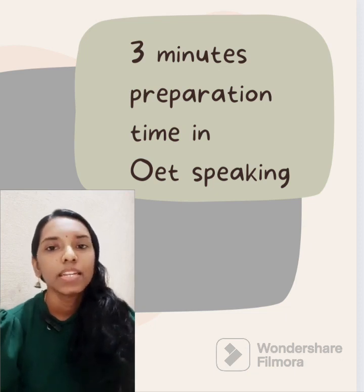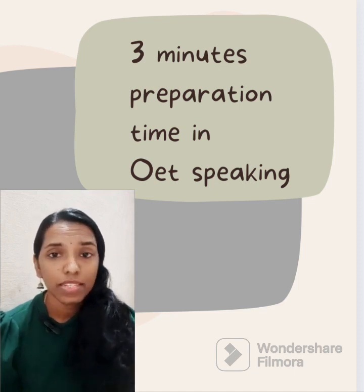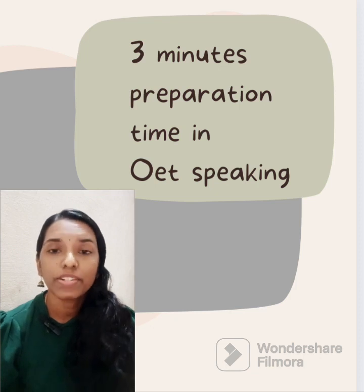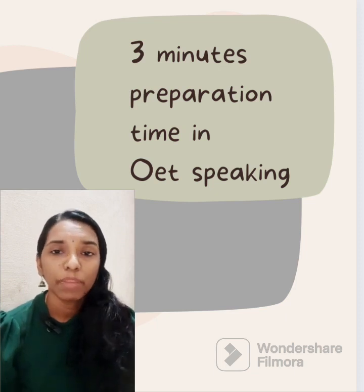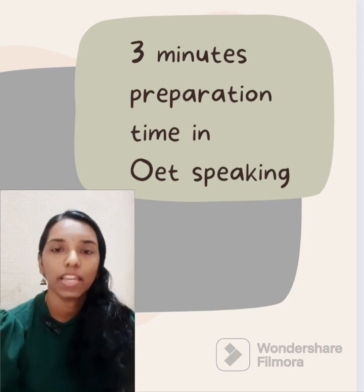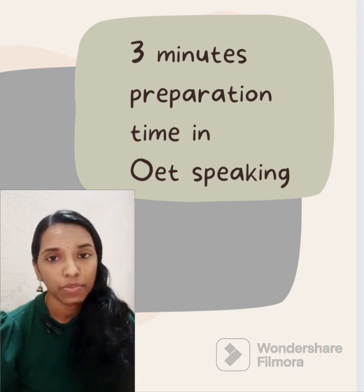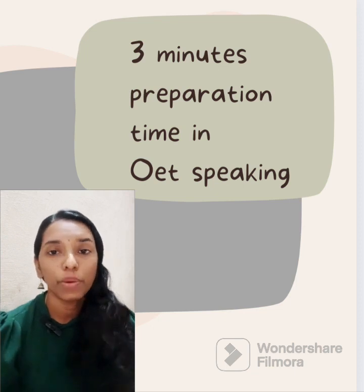For example, the first point is 'confirm patient's visit' - underline 'confirm' and 'visit'. The second subtask might be 'find out patient's concerns' - underline 'find out' and 'concern'. The next task might be 'explore patient's previous exposure with any procedure' - underline 'previous experience'. Like that you can do. And sometimes there will be 'explore', sometimes 'reassure', sometimes 'find out', sometimes 'confirm'. These are the exact task keywords you need to recognize.